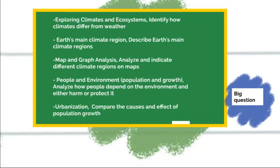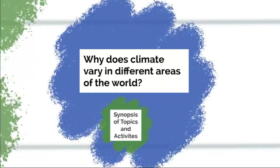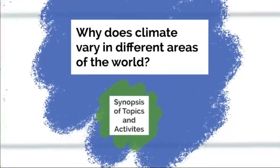Even with the climate regions and the color-coded maps, you're going to be addressing this one big question: why does climate vary in different areas of the world? We know that it varies, but what is the reasoning behind it? What's the process behind it? What's the scientific answer to that?